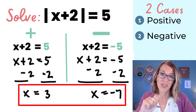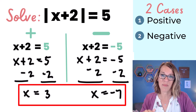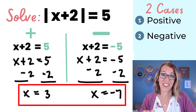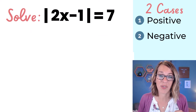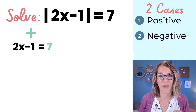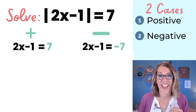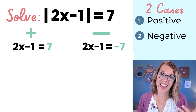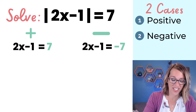So I've got two cases for these absolute value equations, which means two possible solutions. In this next example, there's a little more going on, but I still have the same two cases. In the positive case, what's inside equals 7, and in the negative case, what's inside equals negative 7.